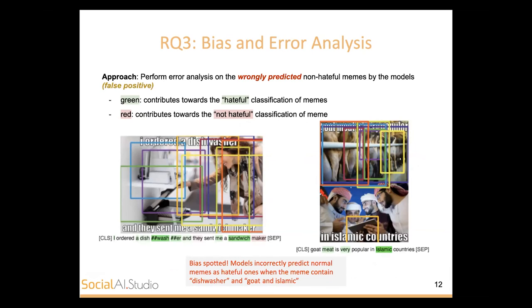For the bias and error analysis, we look at what makes the model predict non-hateful memes as hateful. We realize that the words 'dishwasher' and 'sandwich' are mapped to images of women and given high weightage to certain predictions, showing evidence of unintended model bias.